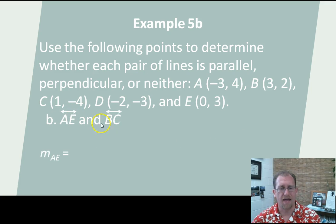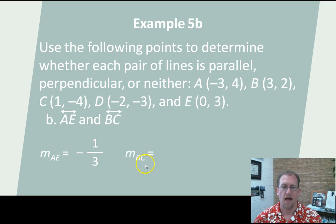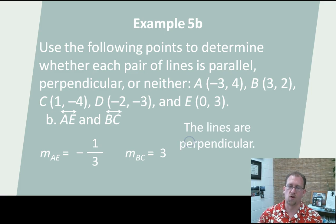Let's look at AE and BC. If I look at those lines, I find that the slope for AE is -1/3, and the slope for BC is 3. Those aren't the same number. But what happens if you multiply -1/3 by 3? The answer is -1, and so the lines are perpendicular to each other.